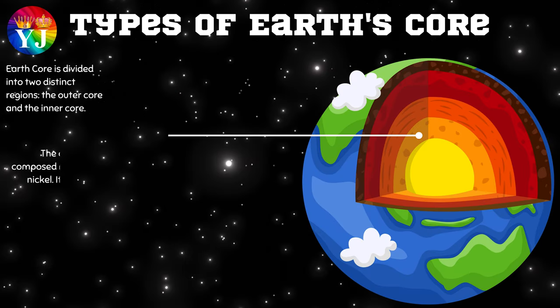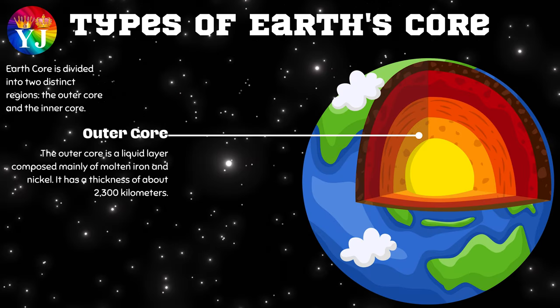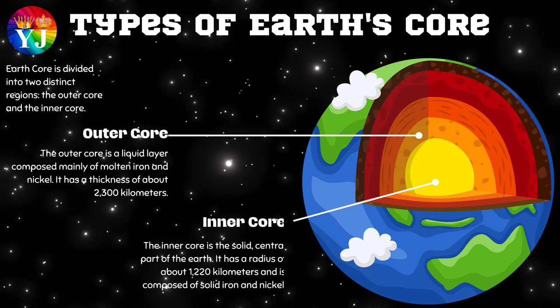The outer core is a liquid layer composed mainly of molten iron and nickel, with a thickness of about 2300 km. The inner core is the solid, central part of the Earth. It has a radius of about 1220 km and is composed of solid iron and nickel.